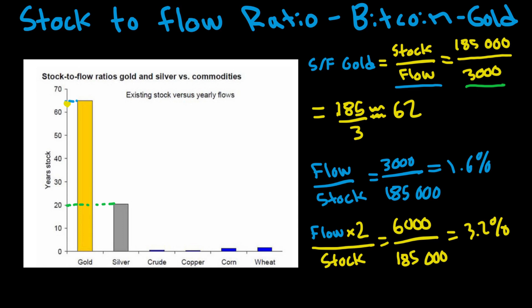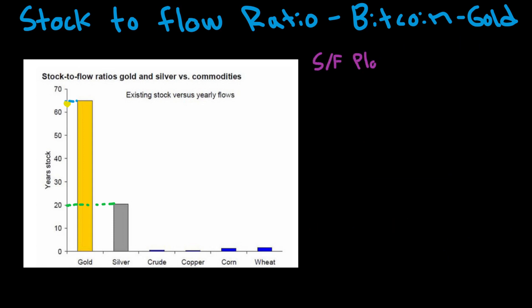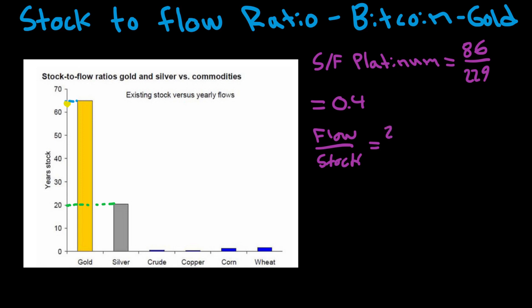Now let's take a look at platinum. In 2009, platinum had a stock of 86 tons and a flow of 229 tons. As you can see, this gives a much lower stock-to-flow ratio — around 0.4 — meaning it would only take 0.4 years to produce the current available amount of platinum. If we flip it and compare flow to stock, we get 229 divided by 86, which is around 226% — meaning the annual inflow of platinum is very high relative to existing supply.